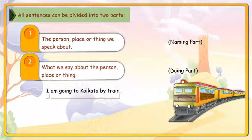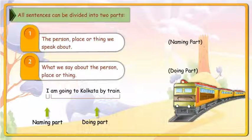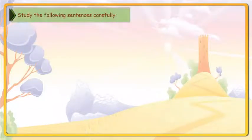I am going to Kolkata by train. 'I' is the naming part. 'Am going to Kolkata by train' is the doing part. Study the following sentences carefully.